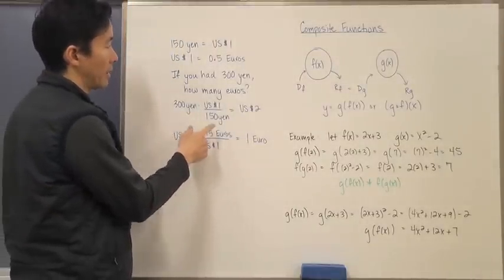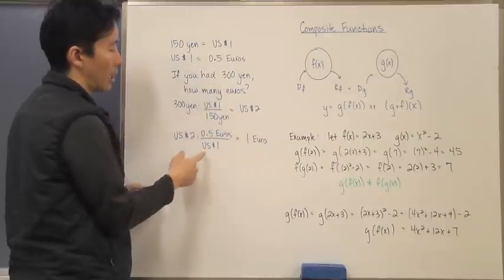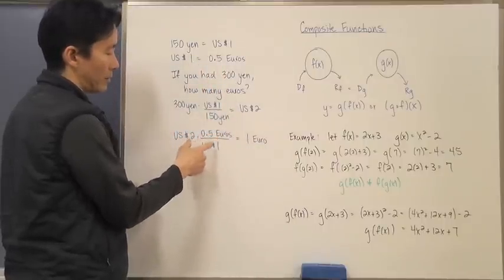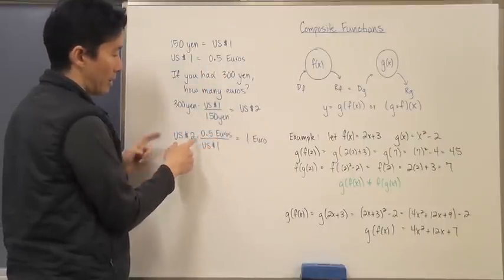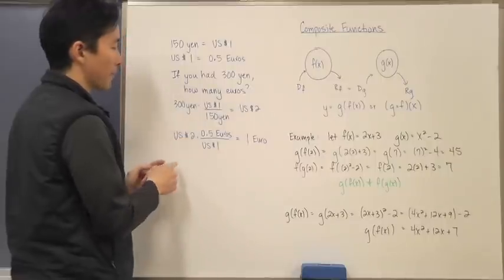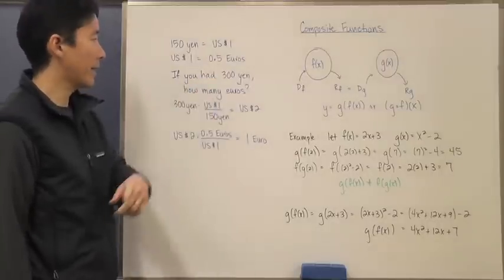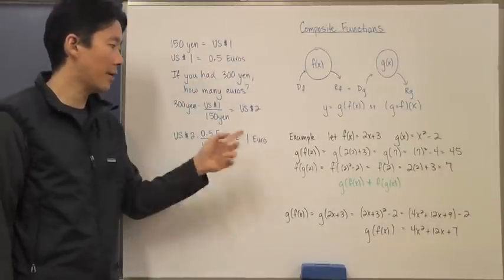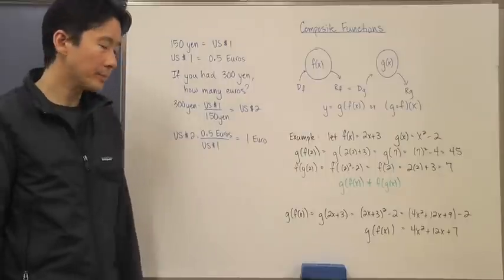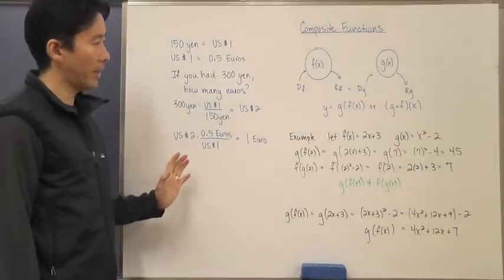After that, I would take the 2 US dollars times it by another conversion factor, which is the second one here: 0.5 euros divided by 1 US dollar. The US dollars would cancel out, 2 times 0.5 is just 1 euro. So I know for a fact that if I had 300 yen, I would actually have 1 euro.